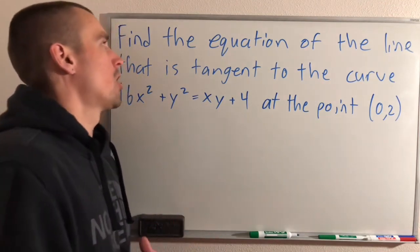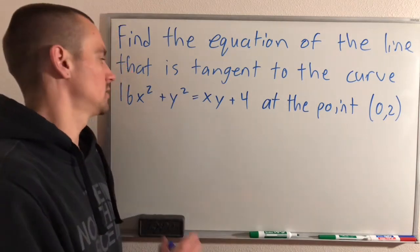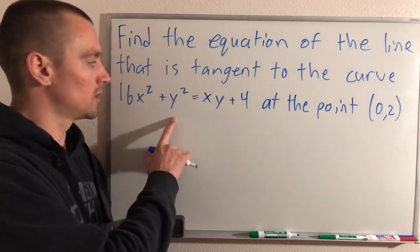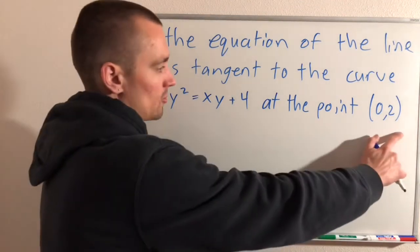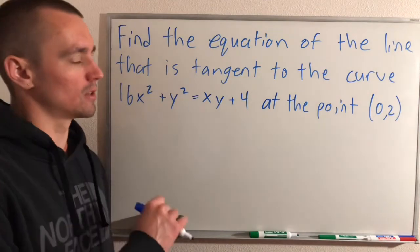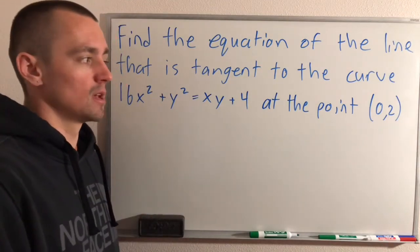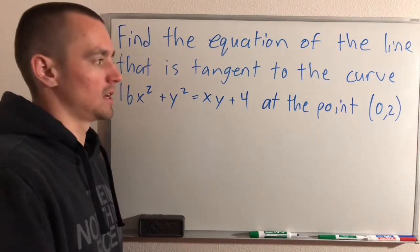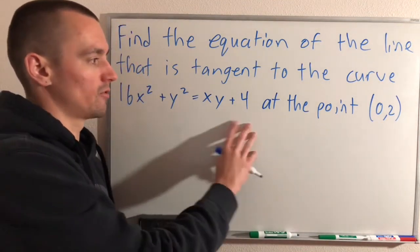So let's go ahead and jump into it. All we're going to be doing is finding the equation of the line that is tangent to the curve 16x² + y² = xy + 4 at the point (0,2). So we need to make sure that our tangent line equation that we're coming up with is linear and it needs to go through this point and it needs to have the same slope as this curve at that point.